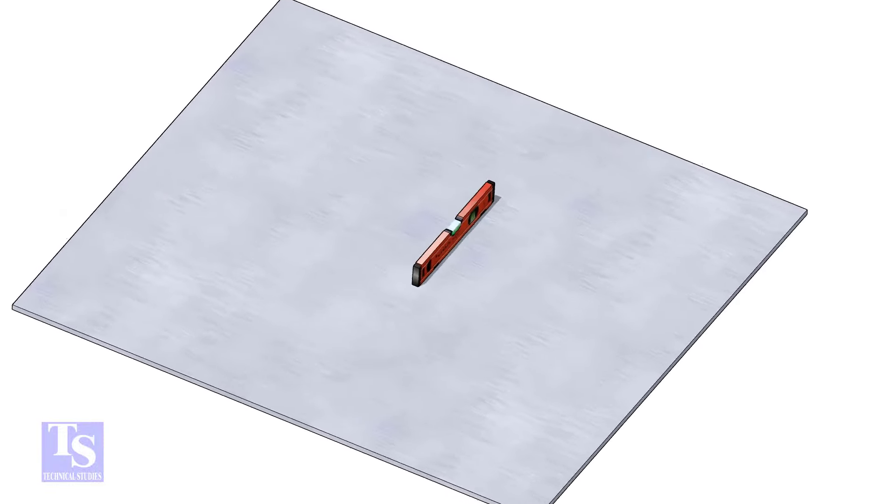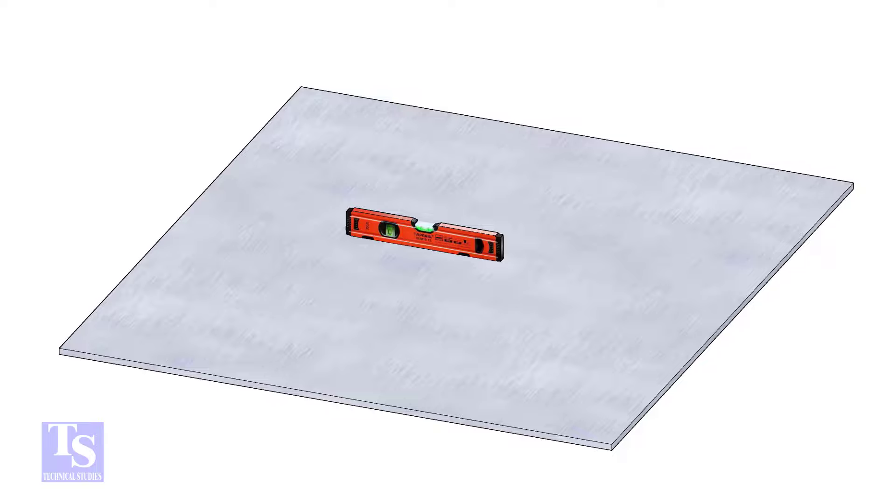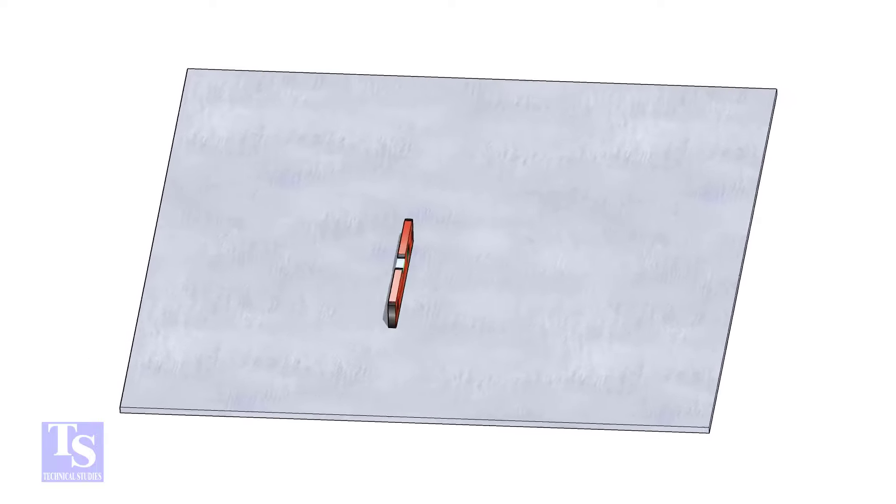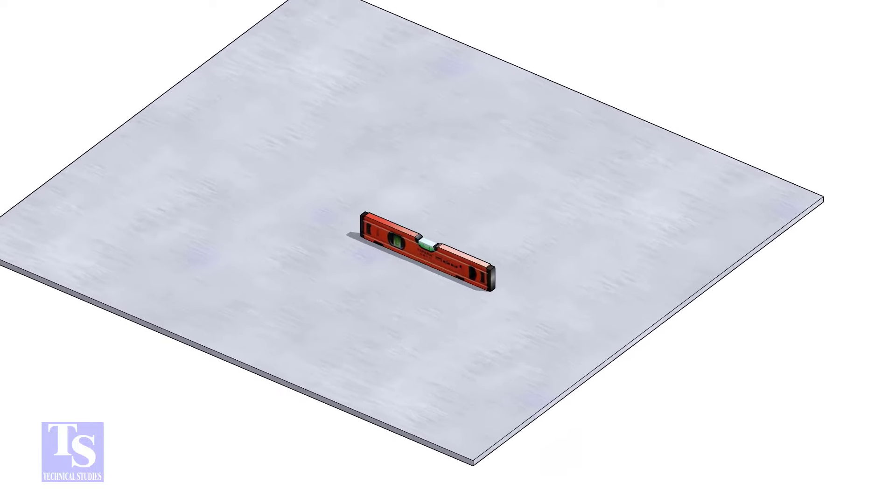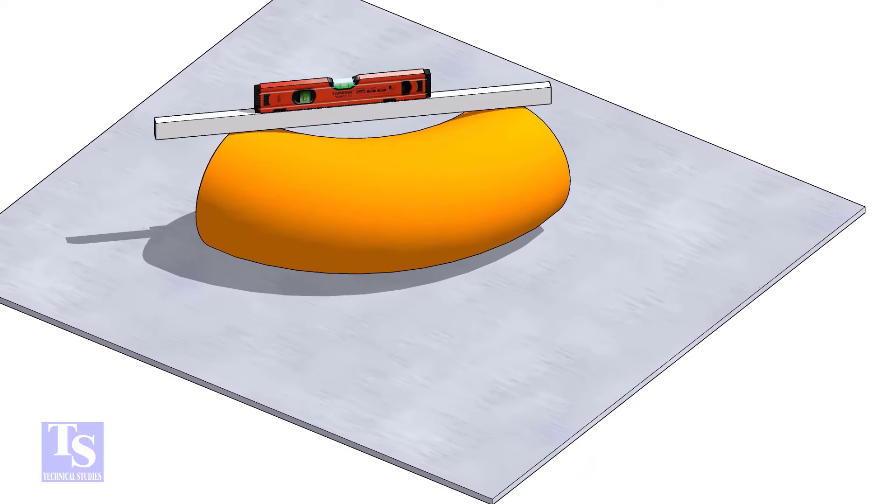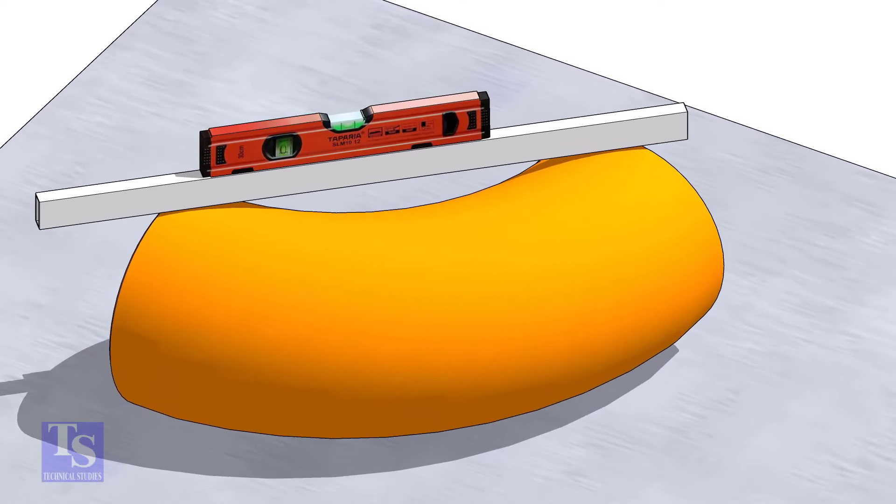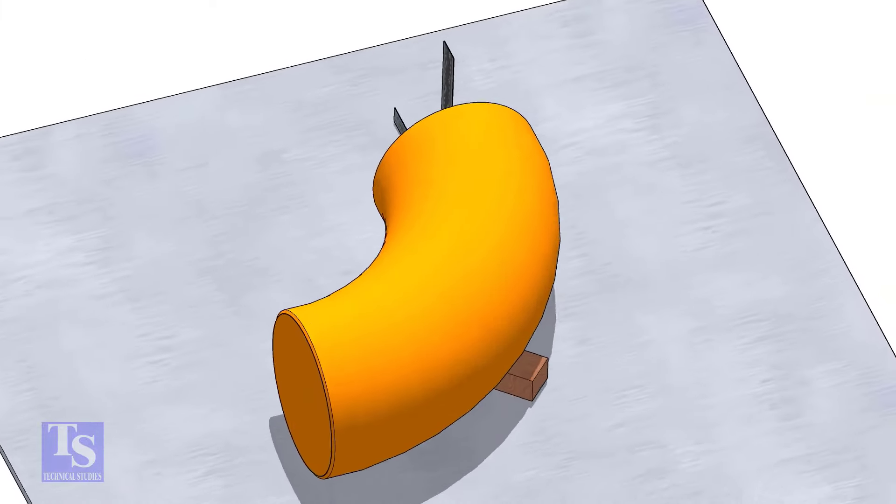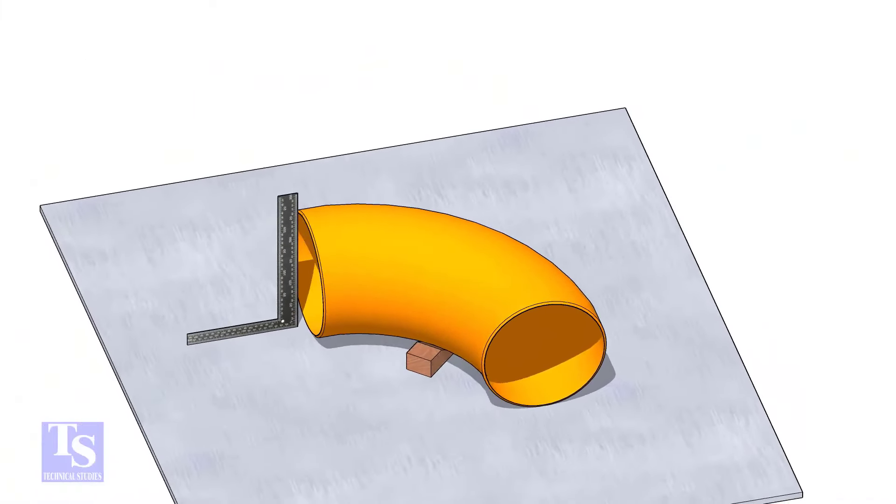Let us mark the center of the elbow. Choose a leveled plate and put the elbow on it. Check the level of the elbow. Check the squareness of the face of the elbow with the plate. If necessary, put some packing below as shown.